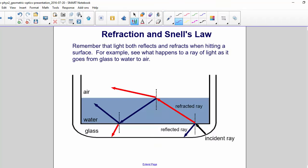Remember that light both reflects and refracts when hitting a surface. For example, let's see what happens to a ray of light as it goes from glass to water to air. The incident ray comes in from the glass to water, so the refracted ray bends away and the reflected ray is the same angle.